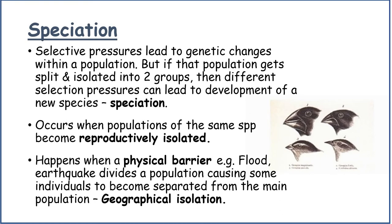Selective pressures lead to genetic changes within a population, but if that population gets split and isolated into two groups, then different selection pressures can lead to the development of a new species. This is known as speciation, and it occurs when populations of the same species become reproductively isolated. It happens when a physical barrier like a flood or an earthquake divides a population, causing some individuals to become separated from the main population — this is geographical isolation.